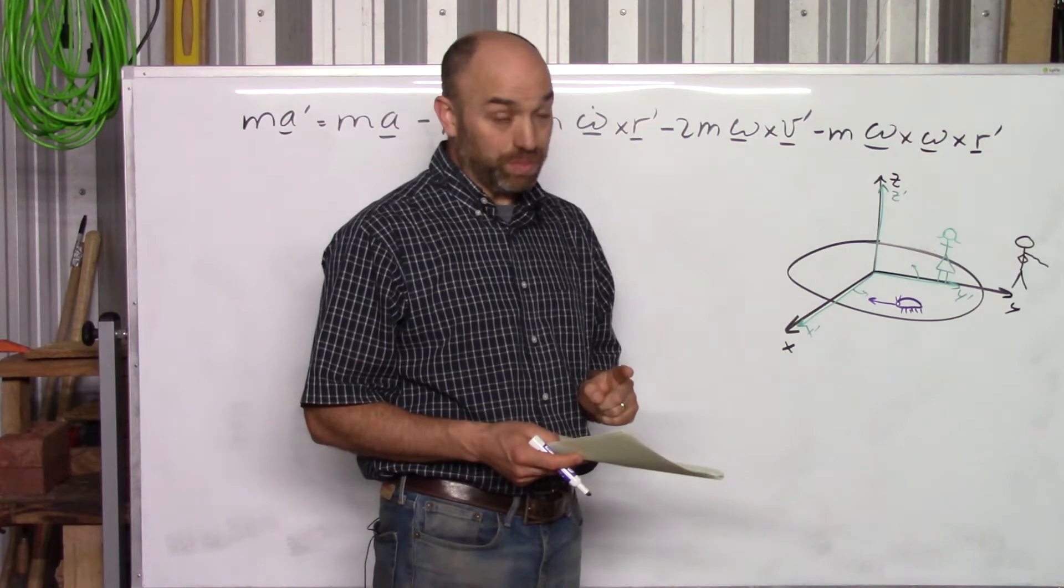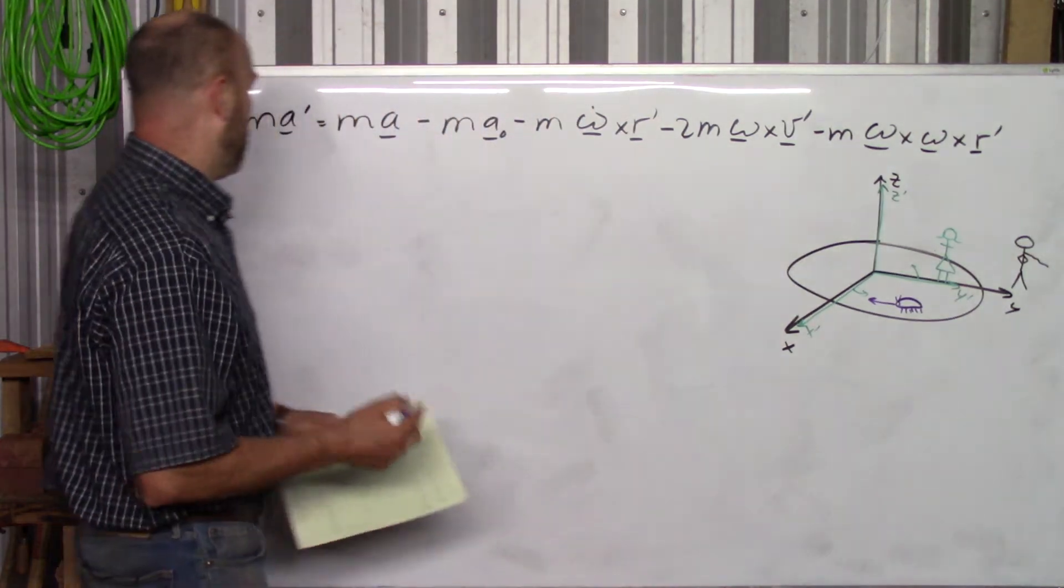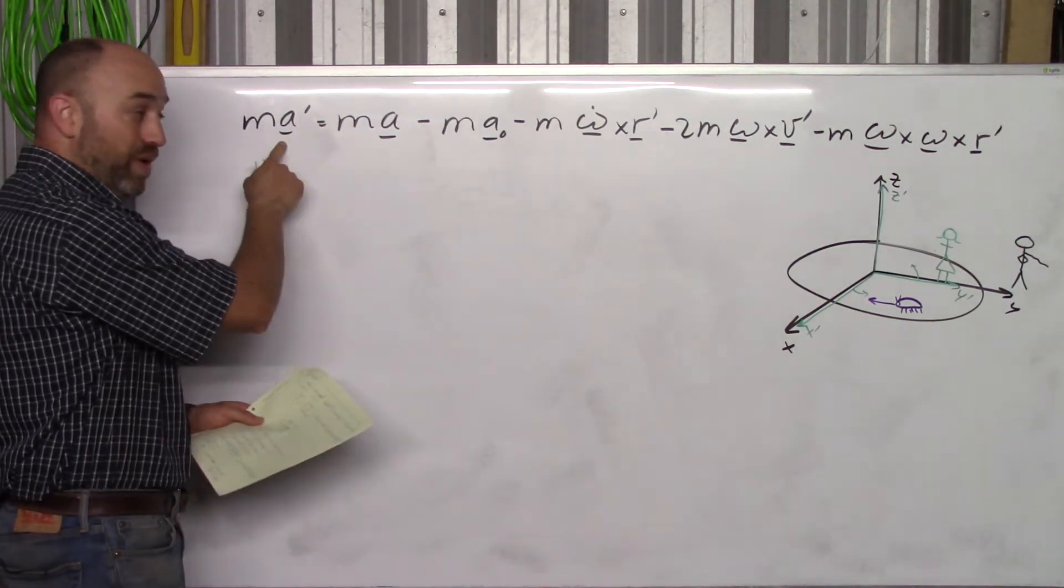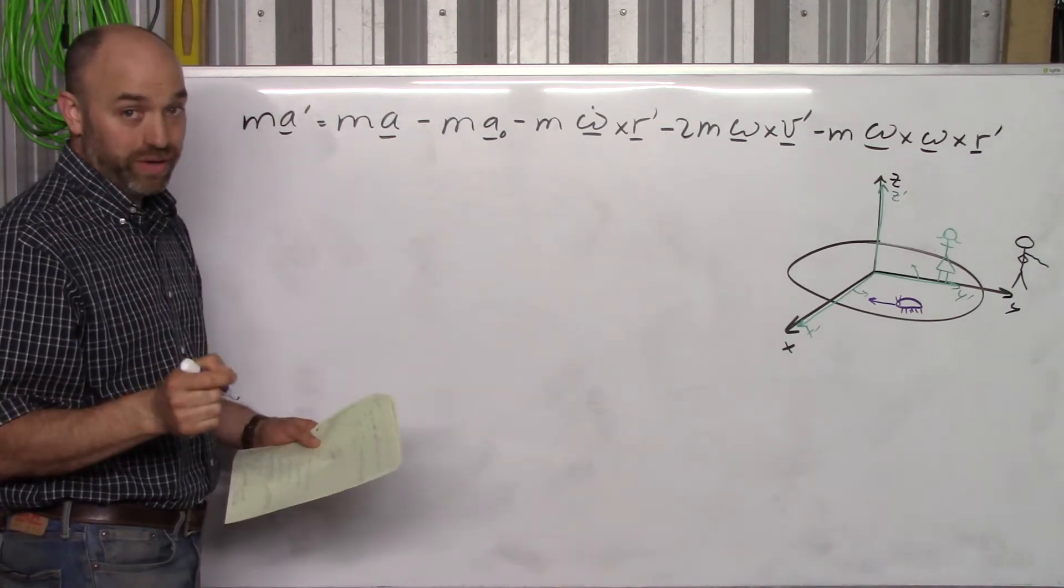Therefore there is centripetal acceleration on that ladybug in the form of MV squared over r. So there is acceleration from Sally Sue's viewpoint, and that's because the ladybug is walking.